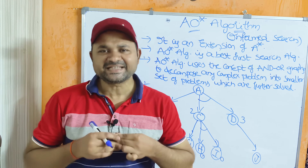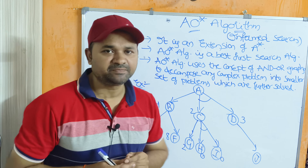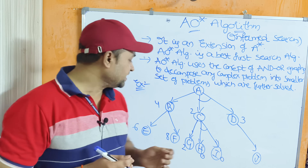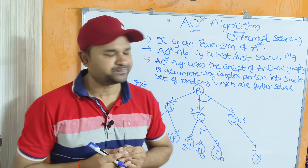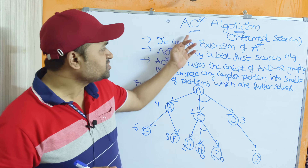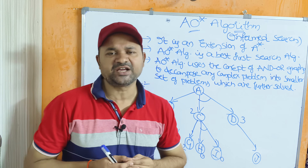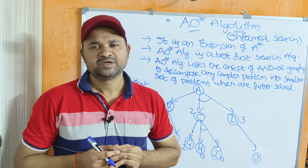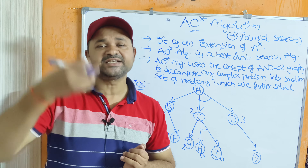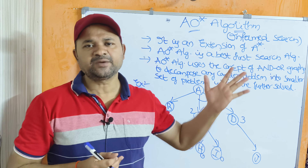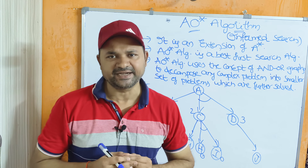Now let us discuss the AO* algorithm with the help of an example and algorithm. AO* algorithm is an informed search algorithm, which means an extra knowledge is required. Mainly heuristic functions are needed.